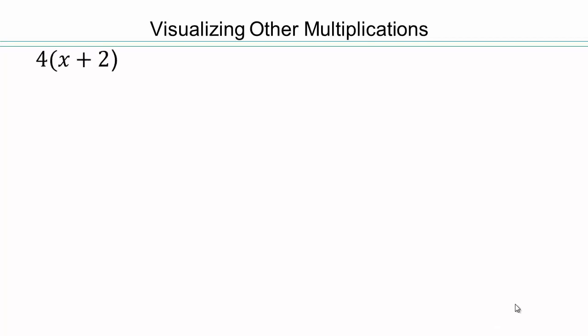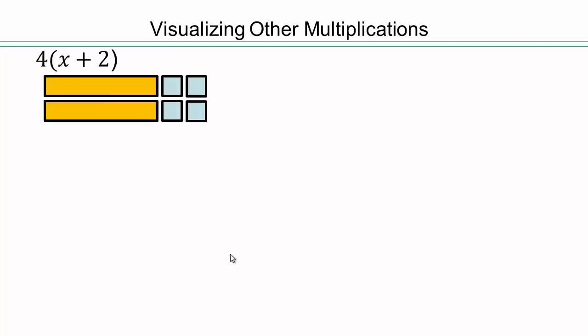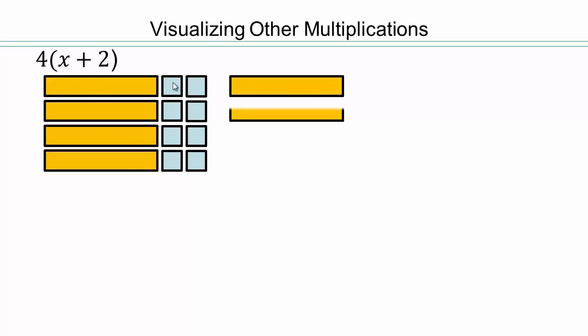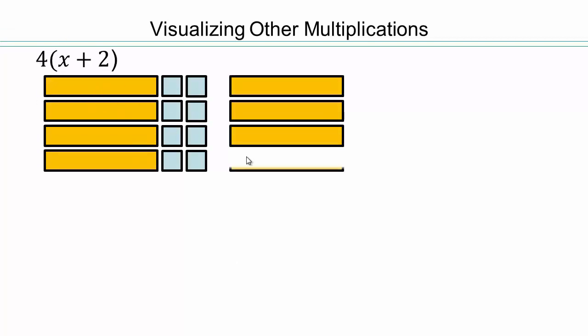Let's take a look and see how we could visualize other multiplications. So let's say 4 times x plus 2 — 4 rows of x plus 2. So here's x, and here's 2, 4 rows of that.